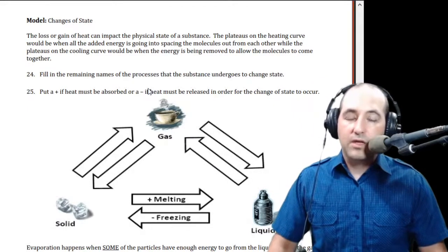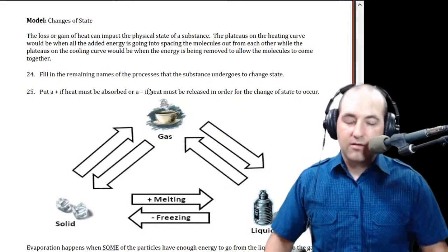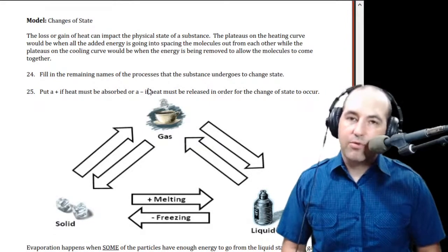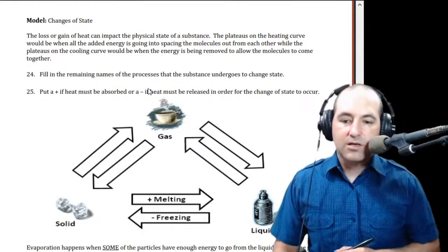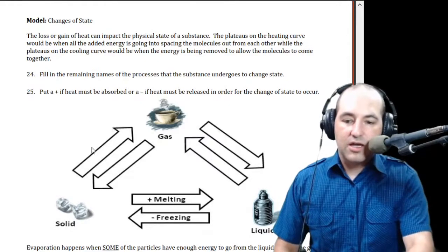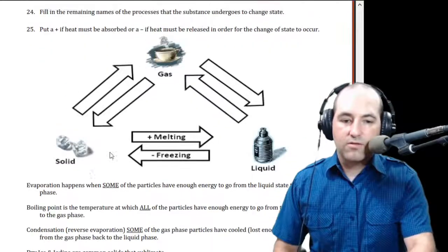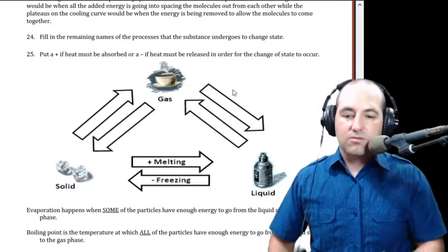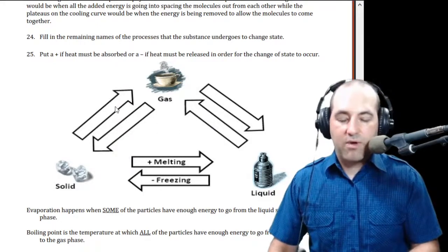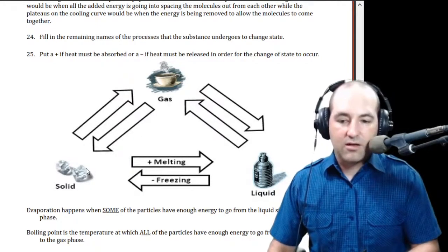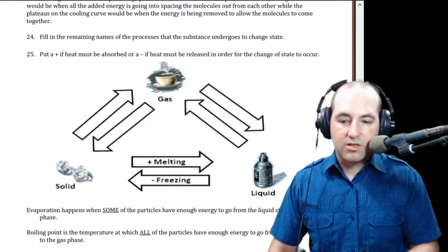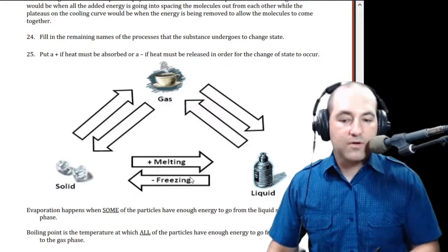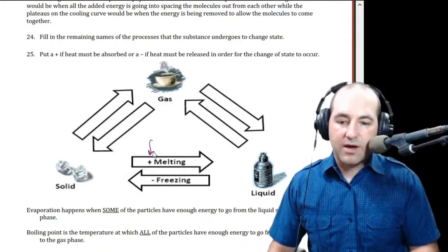We keep defining mixture versus pure substance based on how you separate it, but we haven't really talked about separations involving changes of state, so we're going to do that now. When we change state — I'm sure you've seen ice, water, and water vapor — let's start at the bottom: when a solid becomes a liquid we call that melting, and when a liquid becomes a solid we call that freezing.